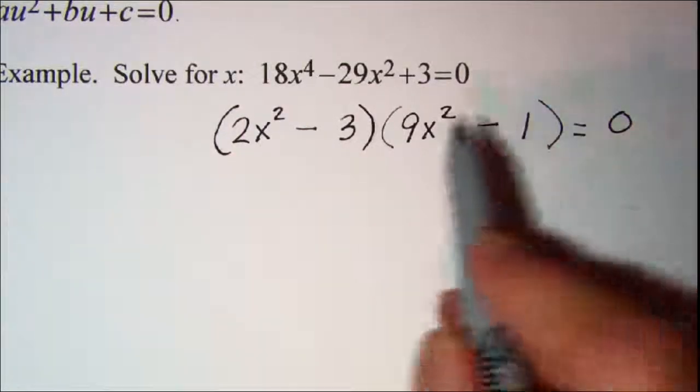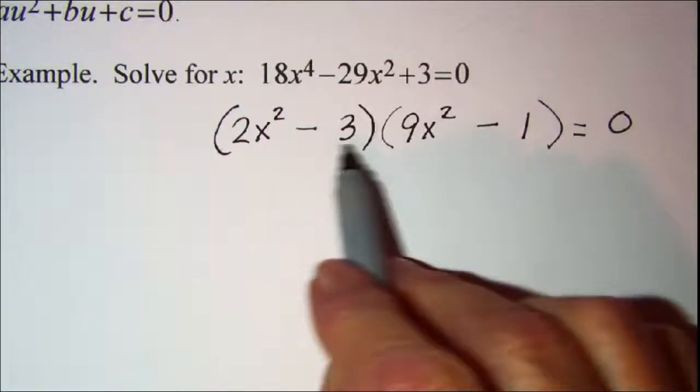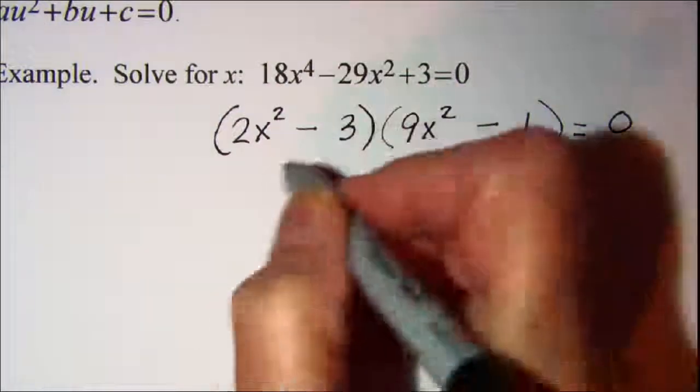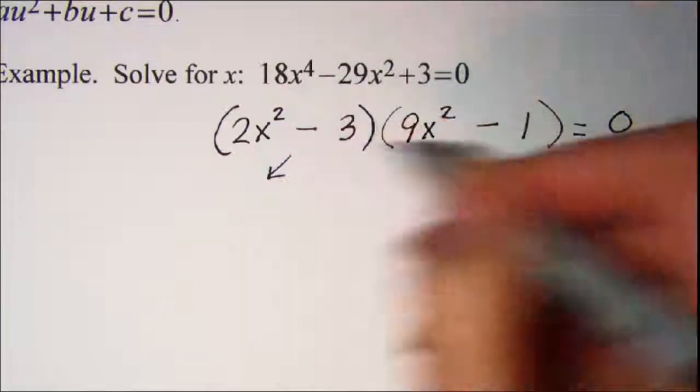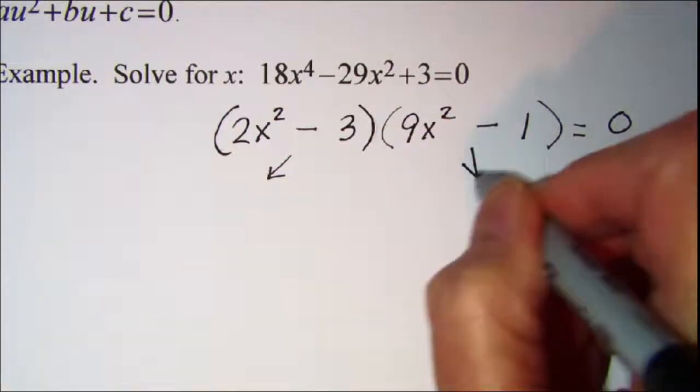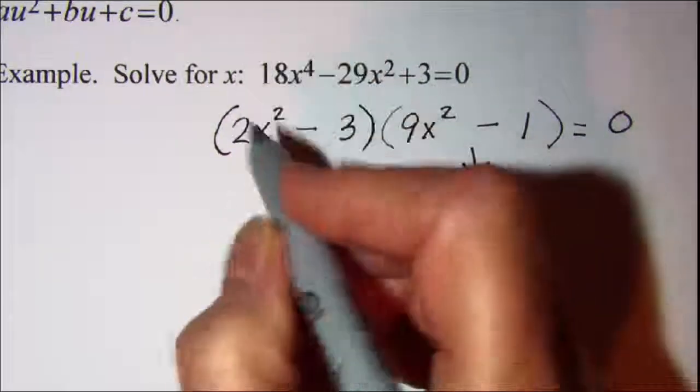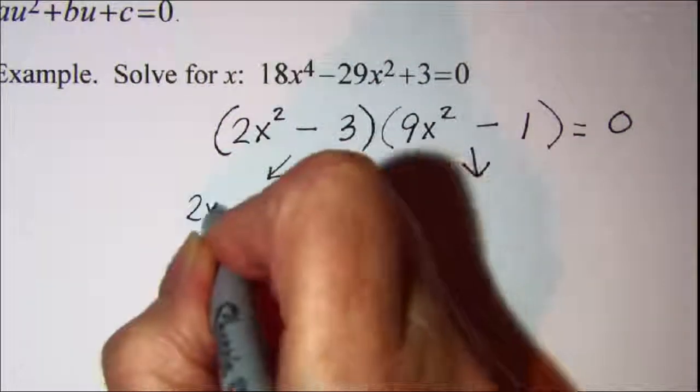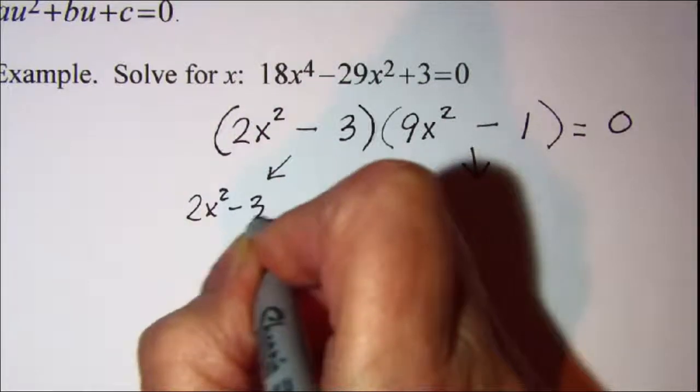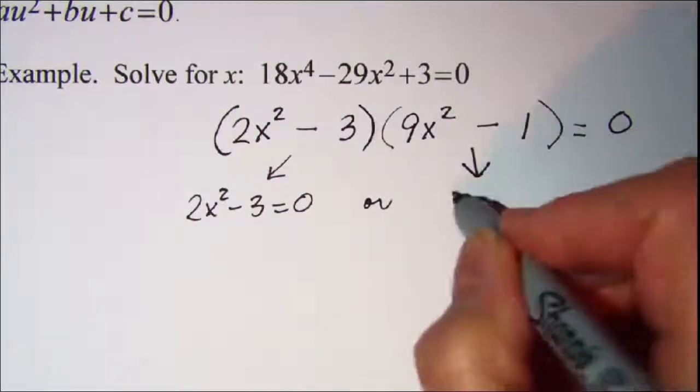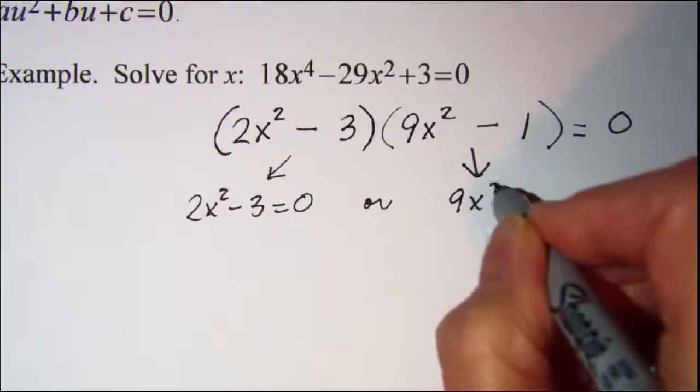Now the zero factor property says that if you have two or more factors multiplied together and they equal zero, then one or the other is equal to zero. So I'm going to set each of these factors equal to zero. So 2x squared minus 3 is equal to zero or 9x squared minus 1 is equal to zero.